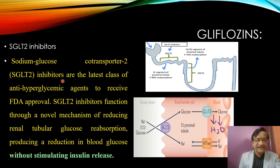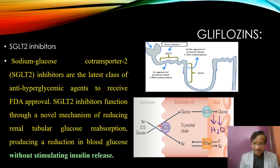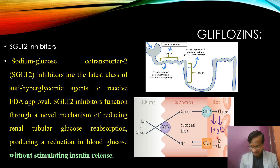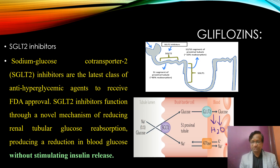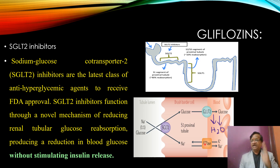SGLT2 inhibitors act on the proximal convoluted tubule. They inhibit SGLT2, causing glucose to be excreted into the urine. Because it is a sodium-glucose co-transporter, sodium also goes out. Due to the sodium loss, some potassium is retained. Sodium and glucose going into the urine cause water to go out as well.